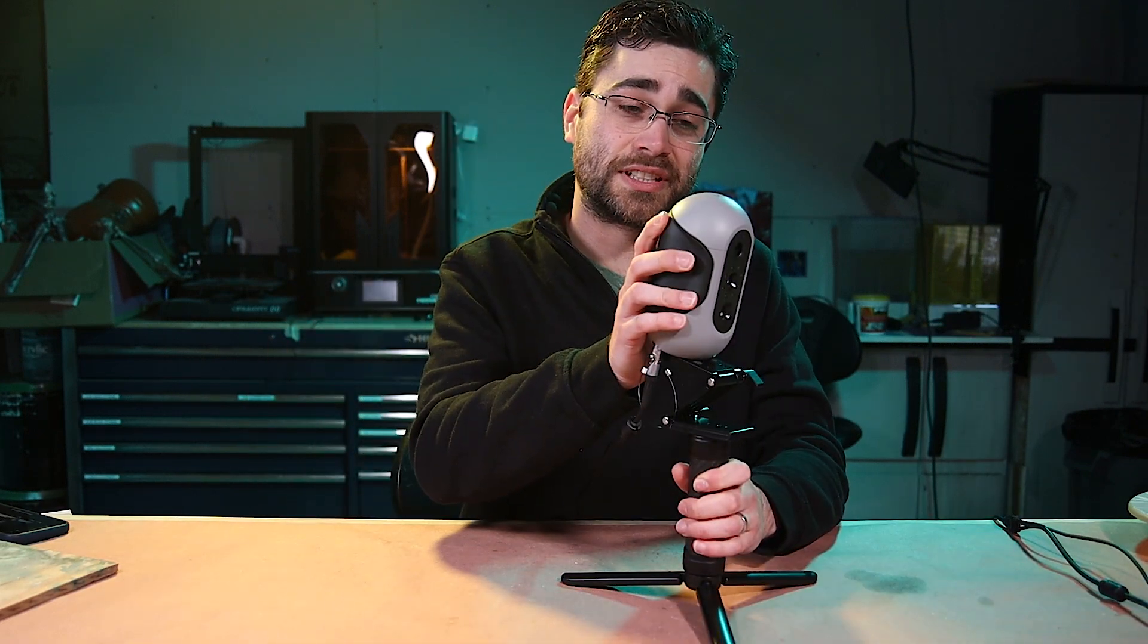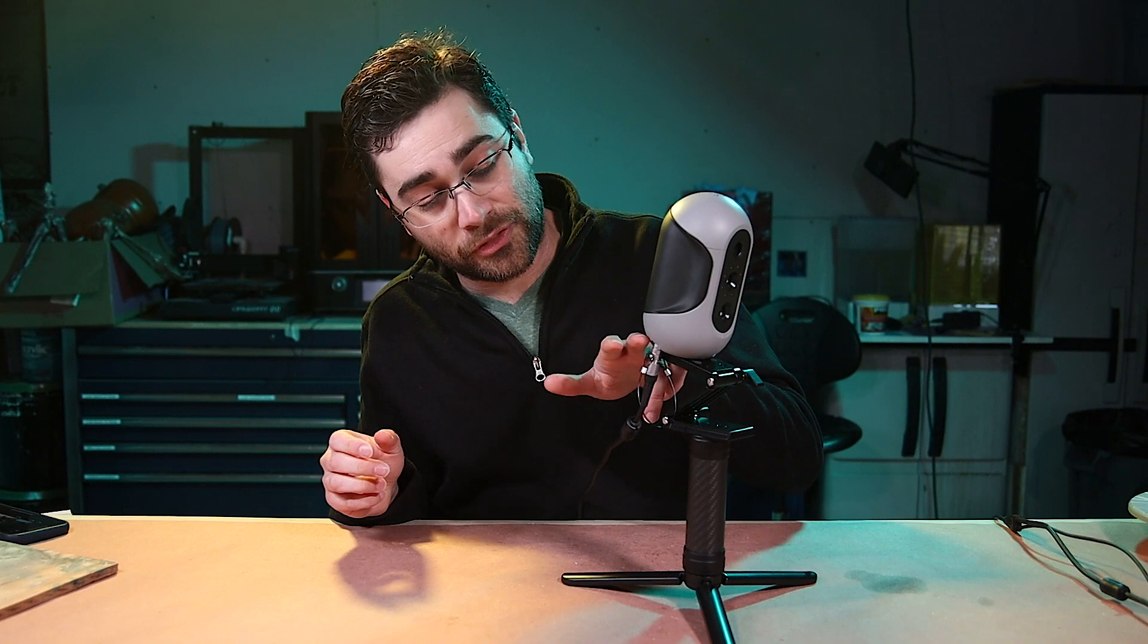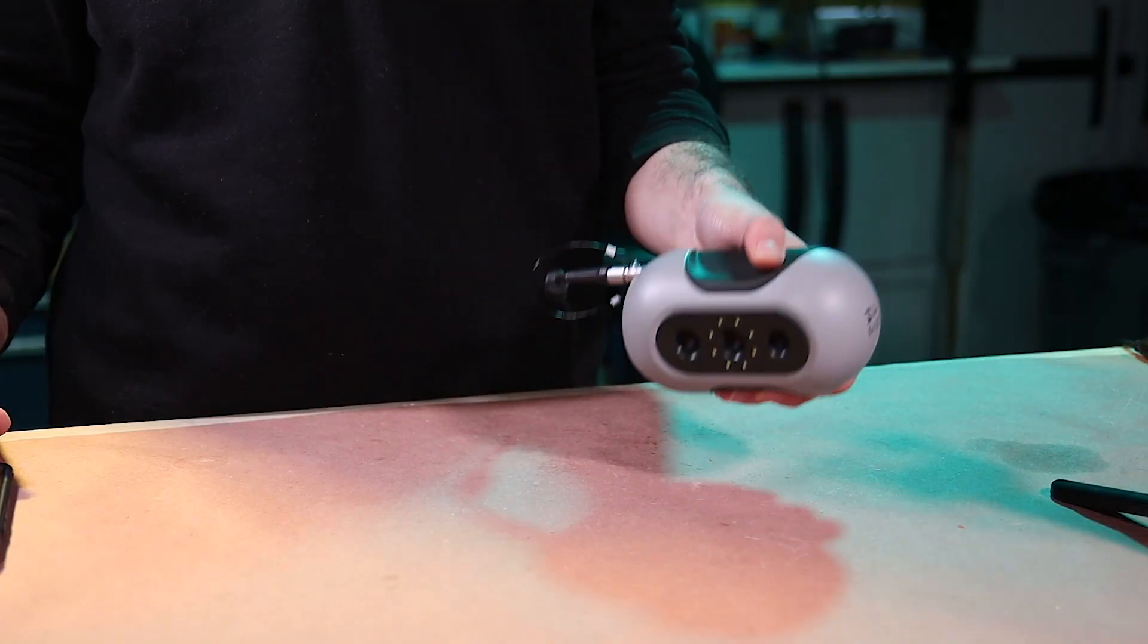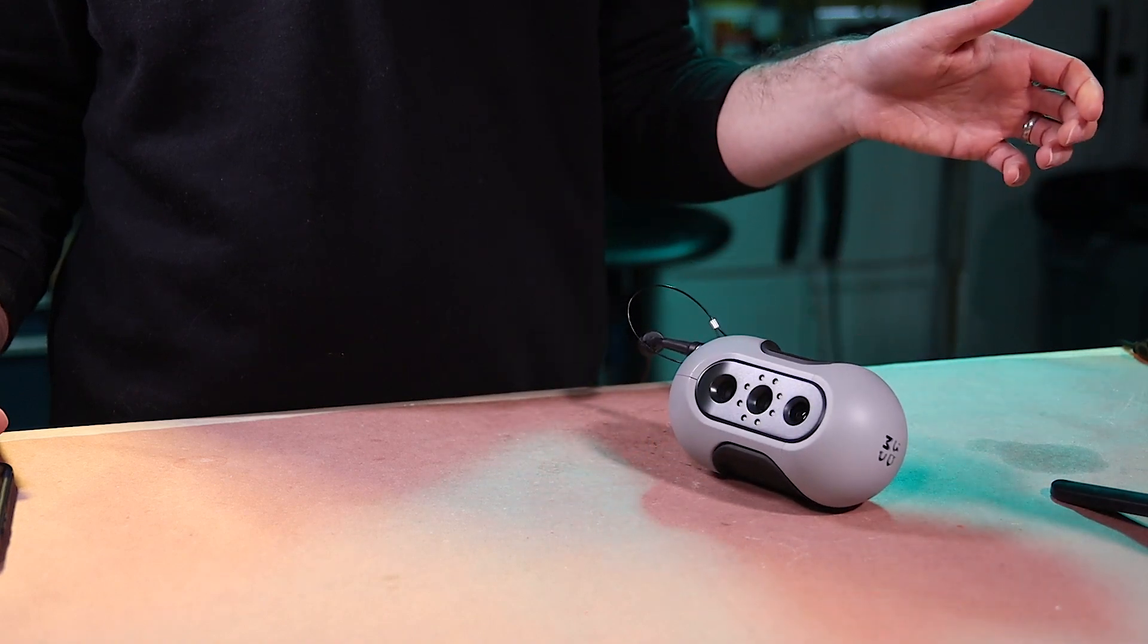Plus, when you actually take the scanner off of the tripod to use it handheld, which it does a pretty good job at, the cord comes out of the bottom, which is also where the flat part is. So if you want to set that down, you can't set it on the flat part, you have to set it on its side. But because it's a cylinder, it wants to rock around. It's not a deal breaker, but it's not my favorite design choice.